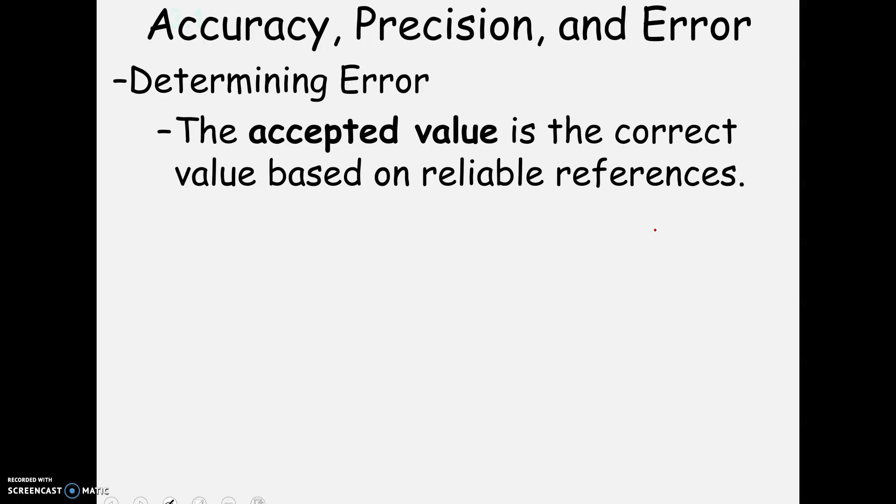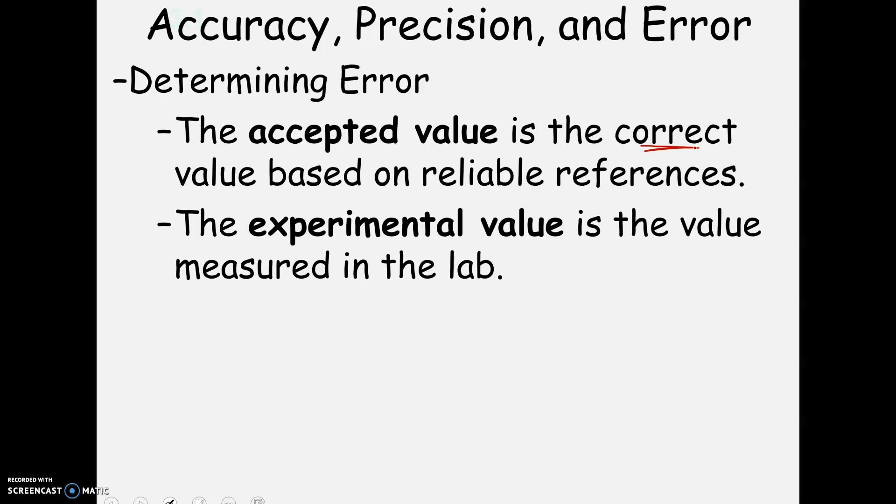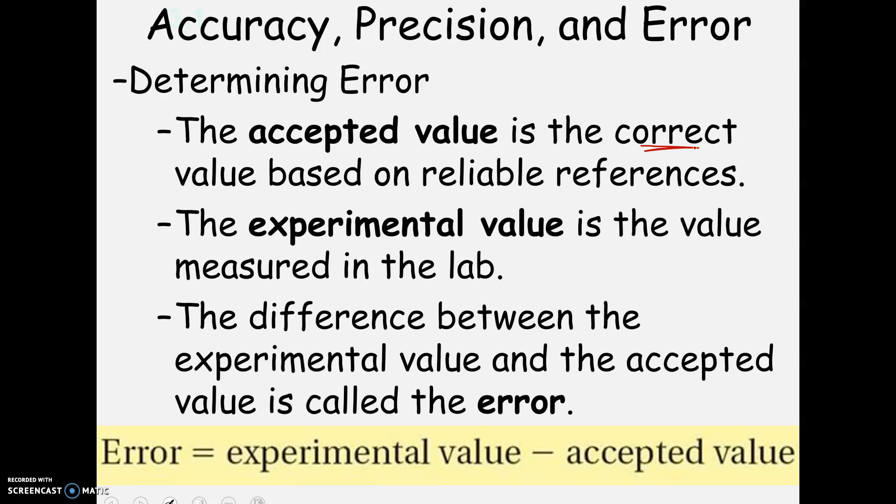So when you do this in a lab, the accepted value is the correct value based on references, reference books where they've done these measurements, and it's the accepted standard. Your error is going to be the difference between your experimental value, what you got, and the accepted value. So it's the experimental minus the accepted.